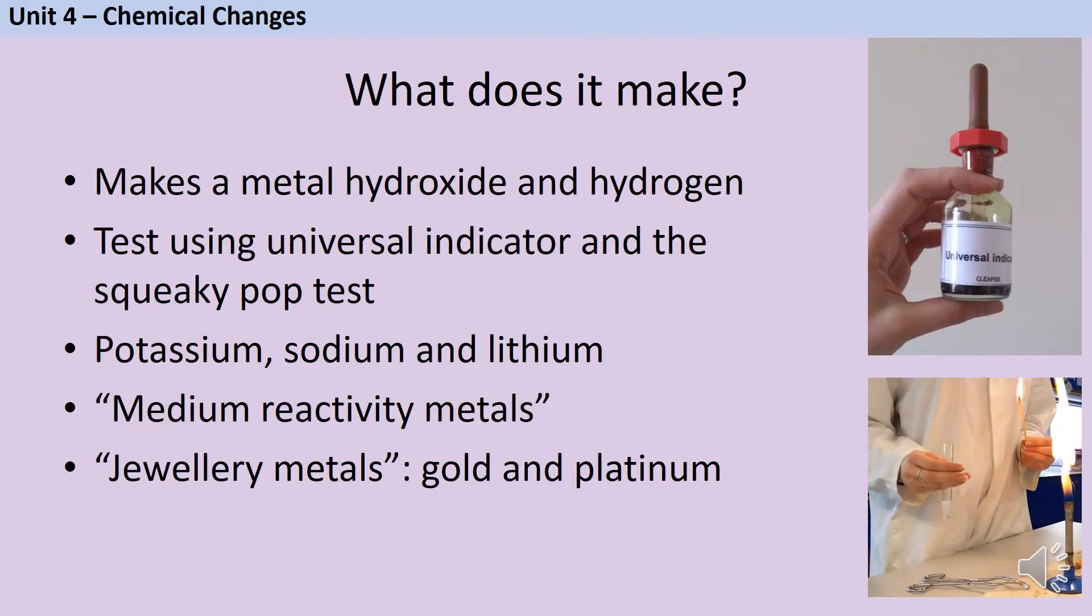When a metal reacts with water, it makes two products. The first one is a metal hydroxide, which is the proper name for an alkali, and the second one is hydrogen gas, which you may see produced as bubbles. You can test for the presence of the metal hydroxide using universal indicator, which is green in neutral solutions, like the water you started with, but blue in alkaline solutions, like the metal hydroxide that you make. You can test for hydrogen by using what's often called the squeaky pop test. If you ignite hydrogen, it will burn rapidly and make a squeaky pop sound.